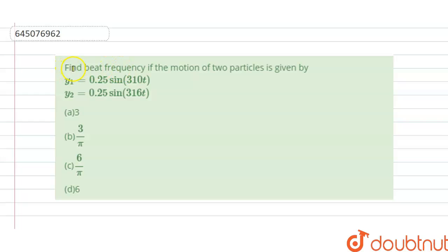Hello students, today our question is find beat frequency of the motion. If the motion of two particles is given by y1 = 0.25 sin(310t) and y2 = 0.25 sin(316t). We have options a, b, c, d given to us, so we have to find the correct option.